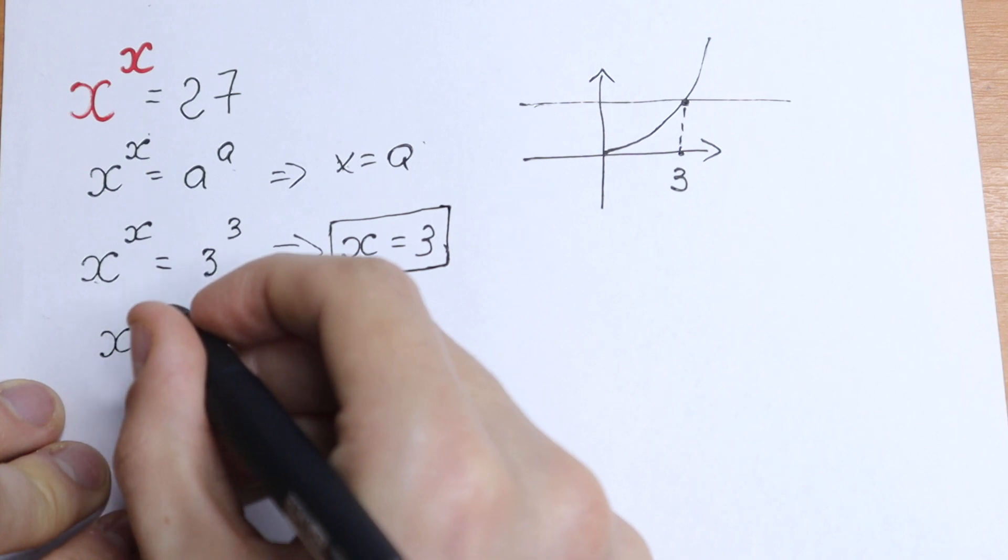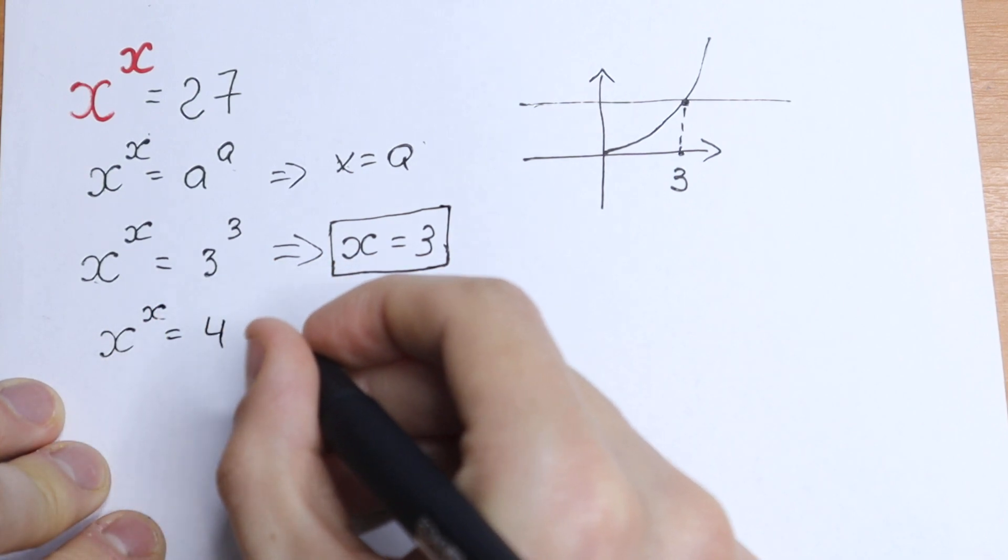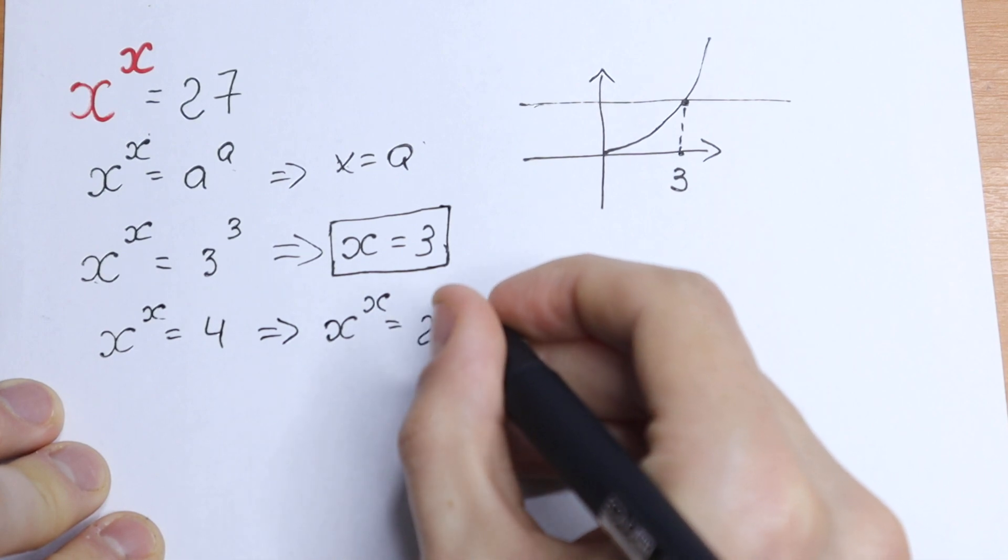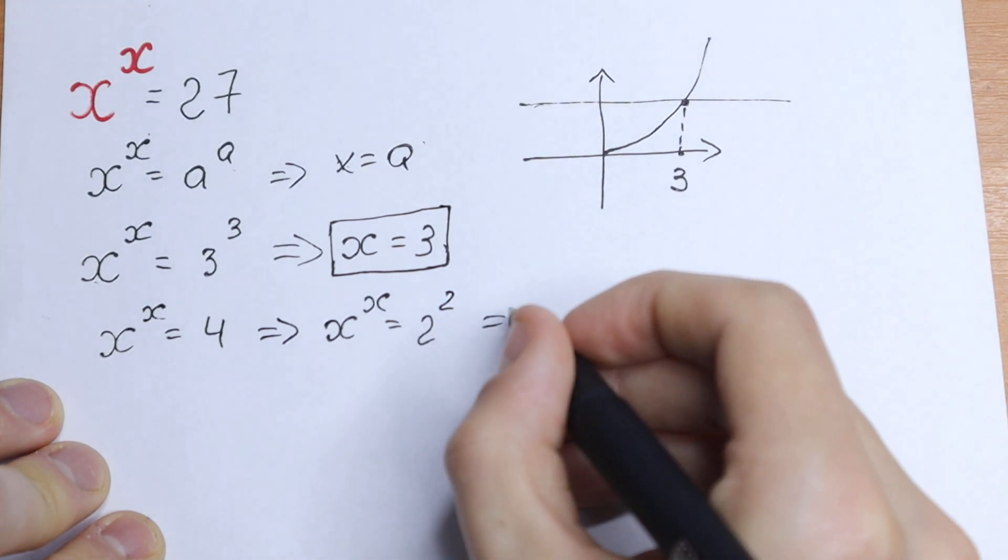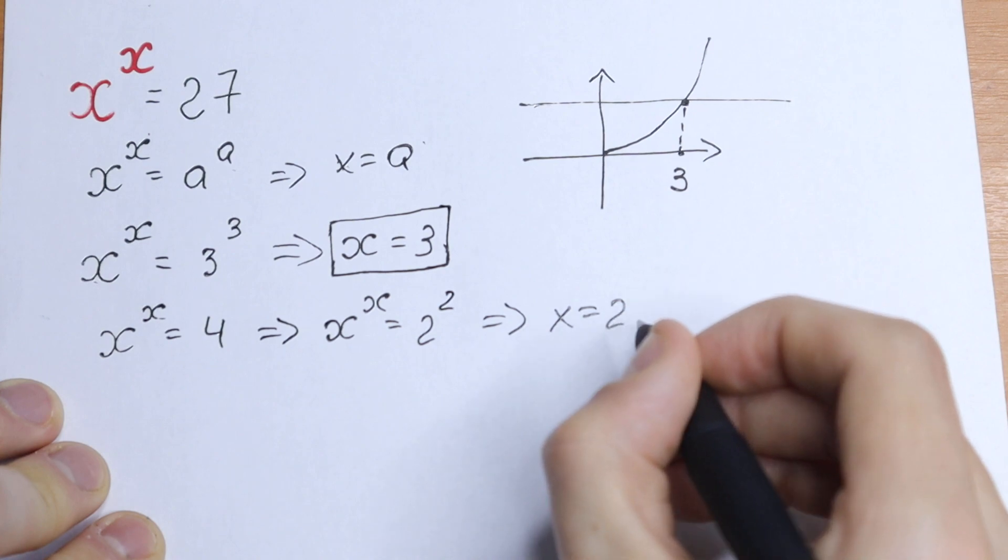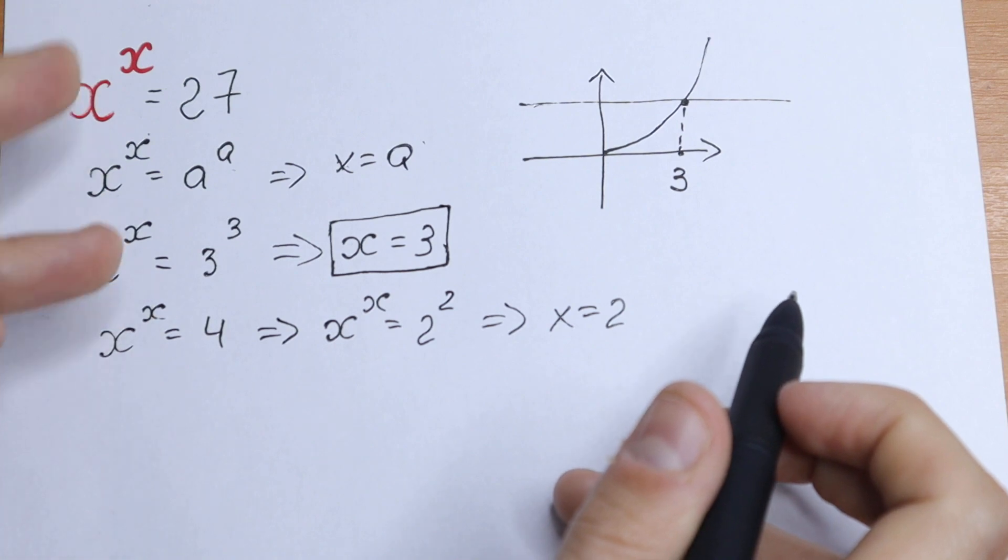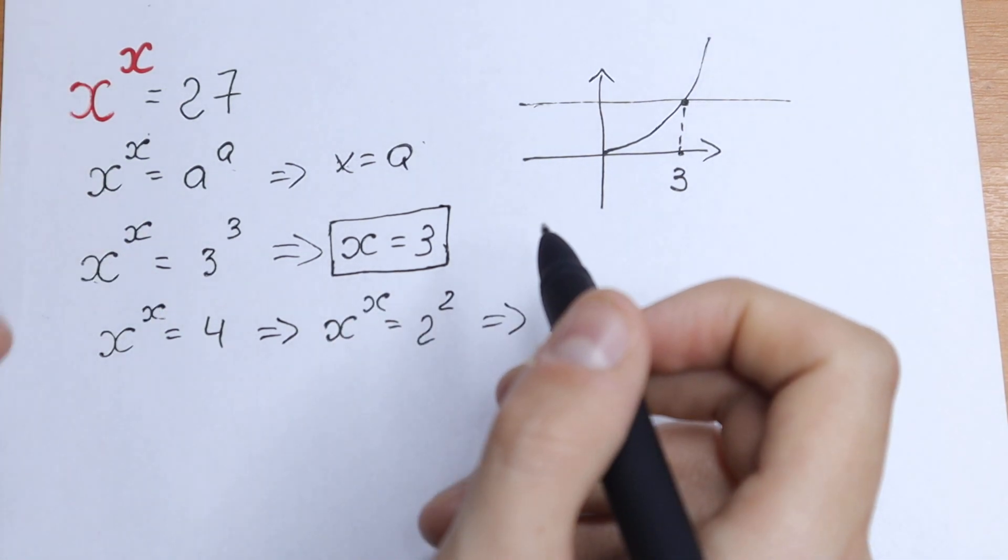For example, x to the power x equal to 4, you can easily write that x to the power x equal to 2 to the power 2, 2 squared, and from here x equal to 2. You can easily work with 4, 5, but it's not a general method. But in our case it works.